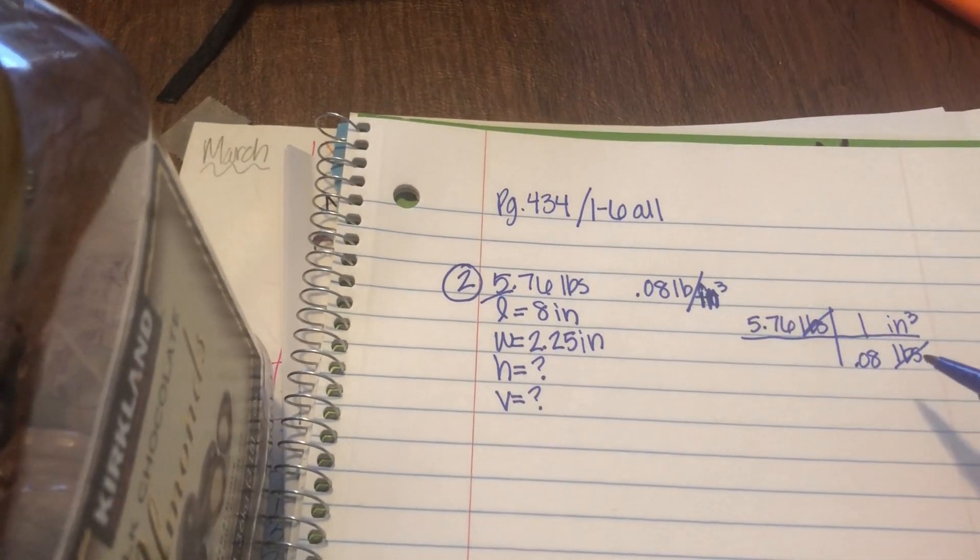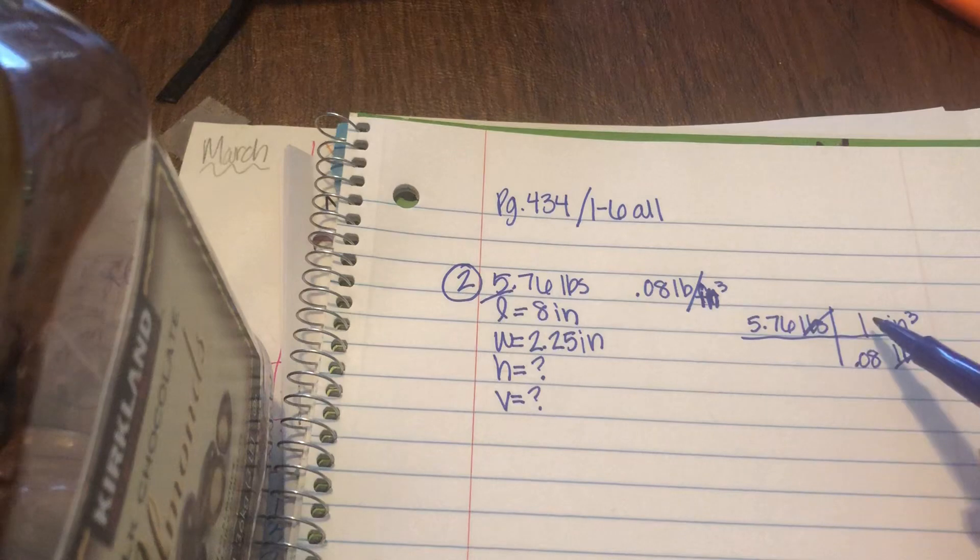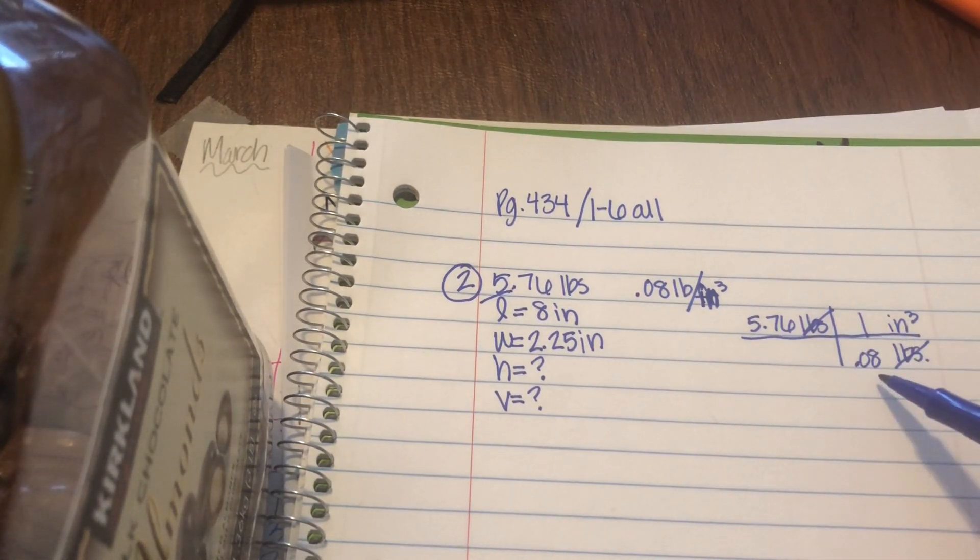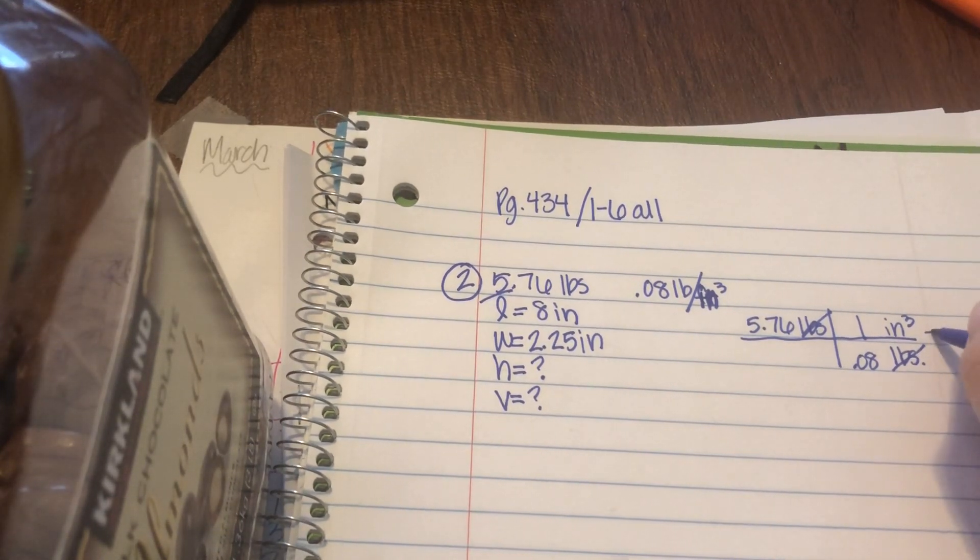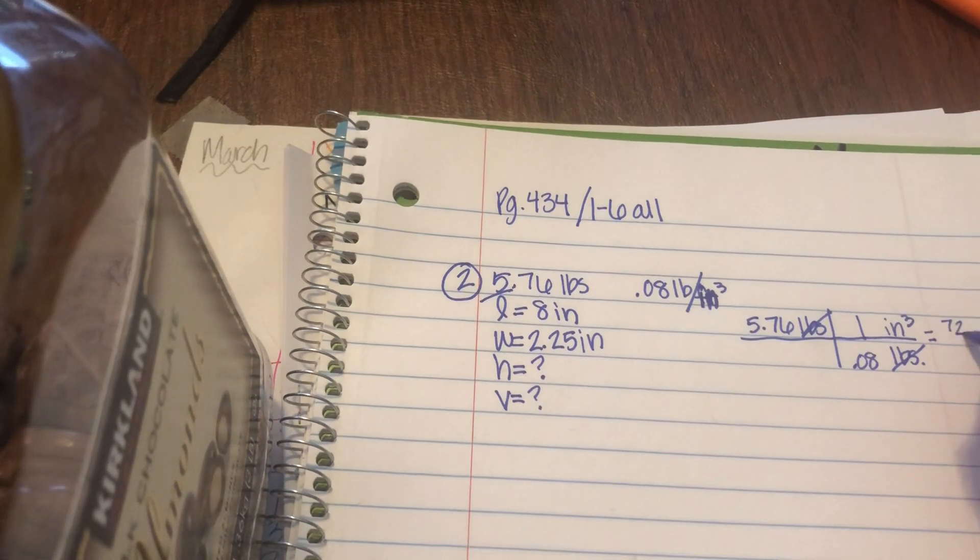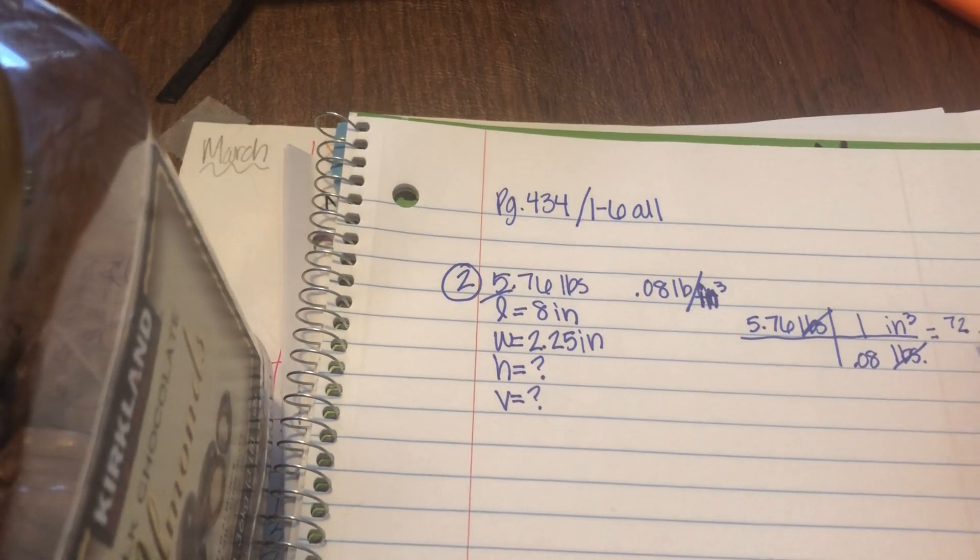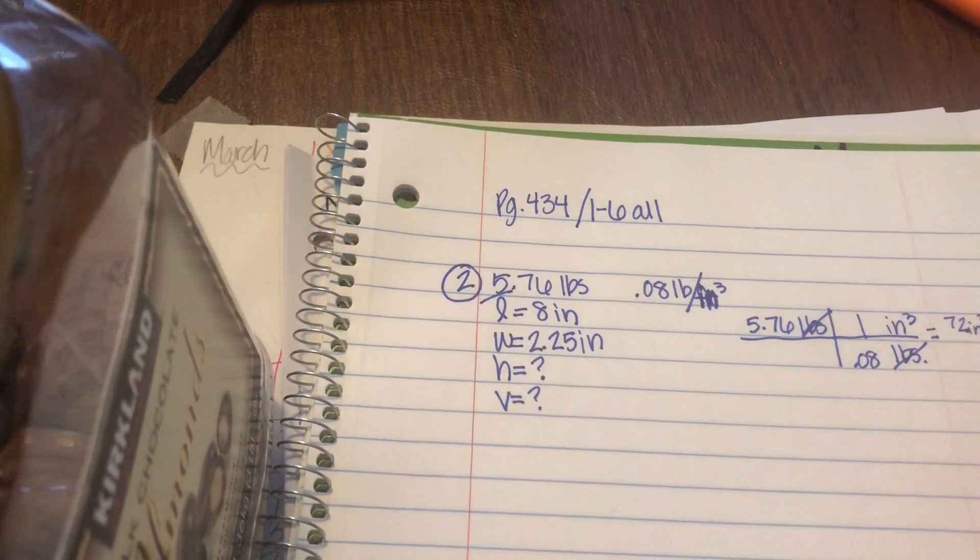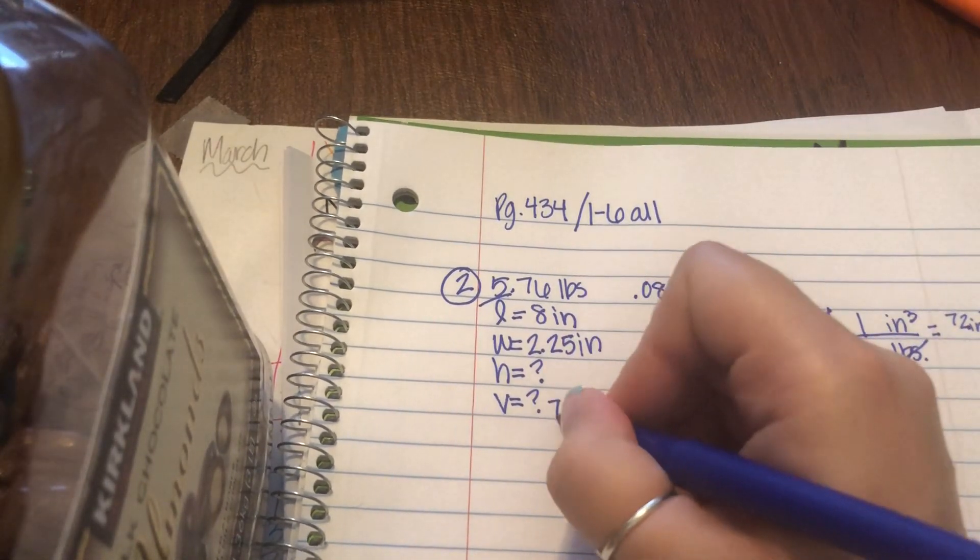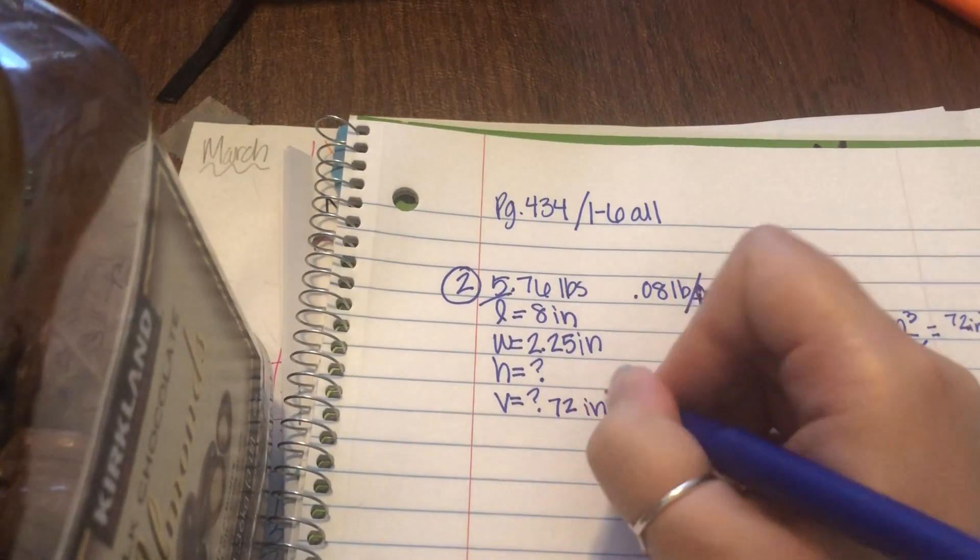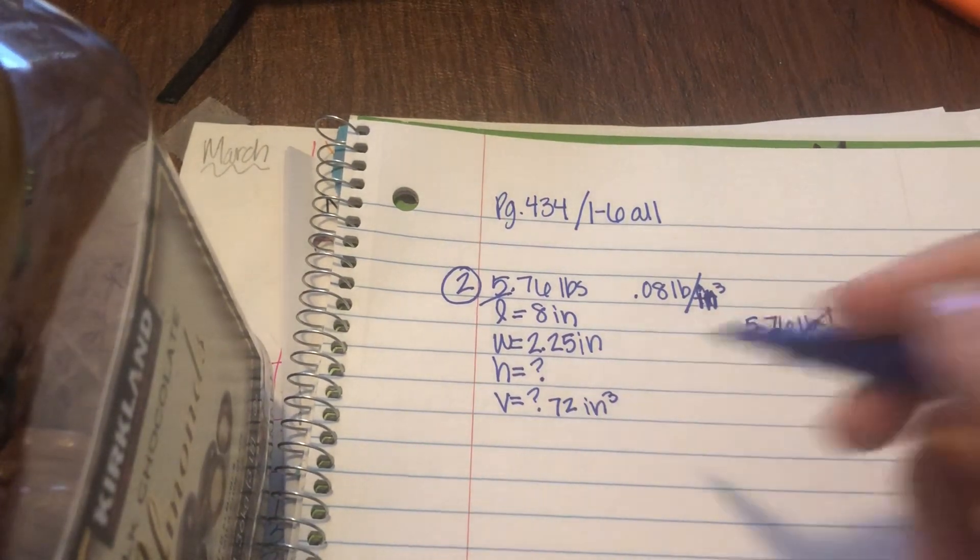Now you just do this times this, which times one is the same thing, 5.76, divided by that number on the bottom, 0.08. So 5.76 divided by 0.08, you get 72, and my unit that's left is cubic inches or inches cubed. So 72 cubic inches is the unit that I ended up ending with. Hey, cubic inches, that's the volume. So that's the volume of it. Step one, I just got the volume.